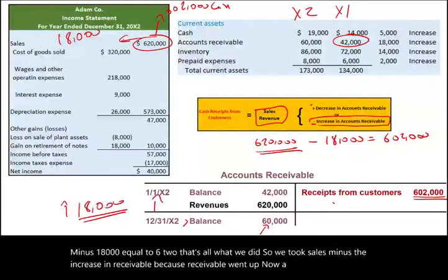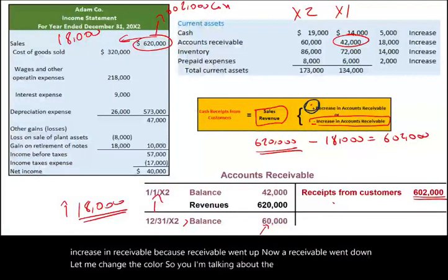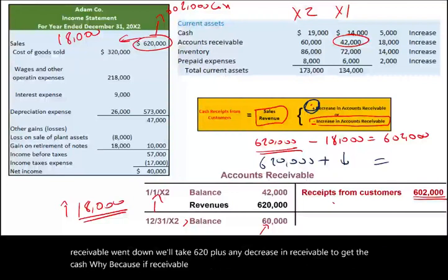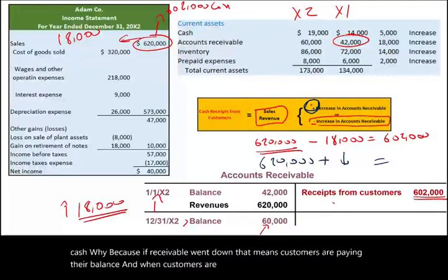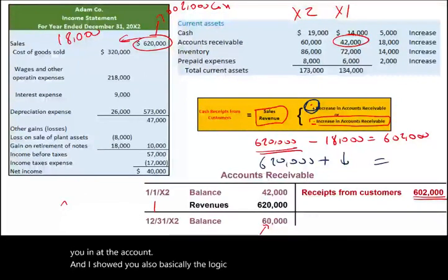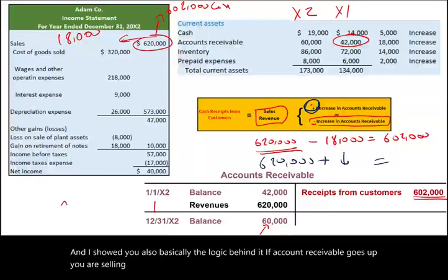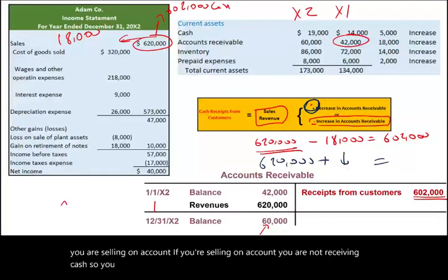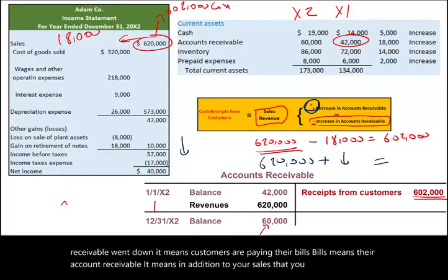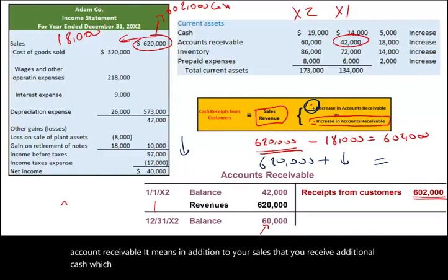If receivable went down instead, you would take $620,000 plus any decrease in receivable to get cash received. Why? Because if receivable went down, customers are paying their balances, meaning you have more cash receipts. So: if accounts receivable goes up, you're selling on account and not receiving cash — deduct the difference. If receivable goes down, customers are paying, so you add that to sales.